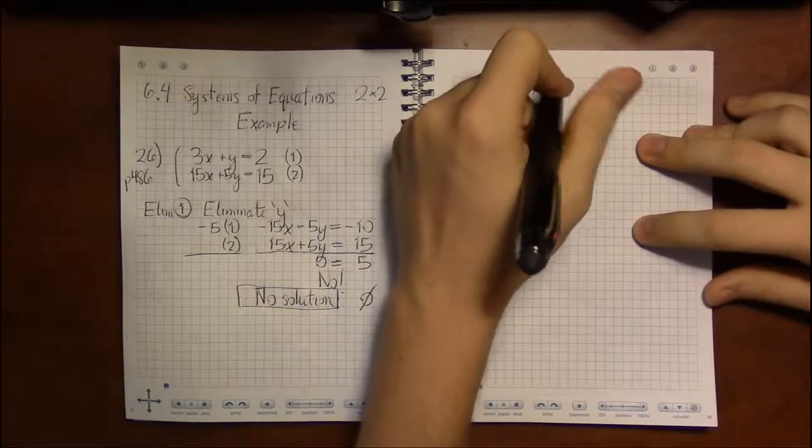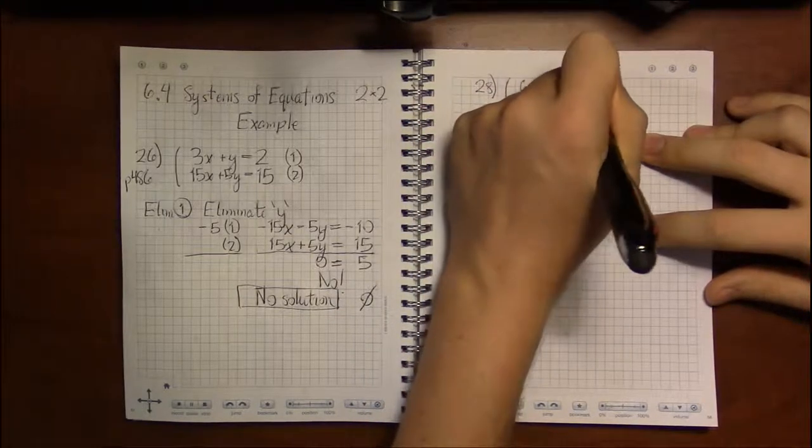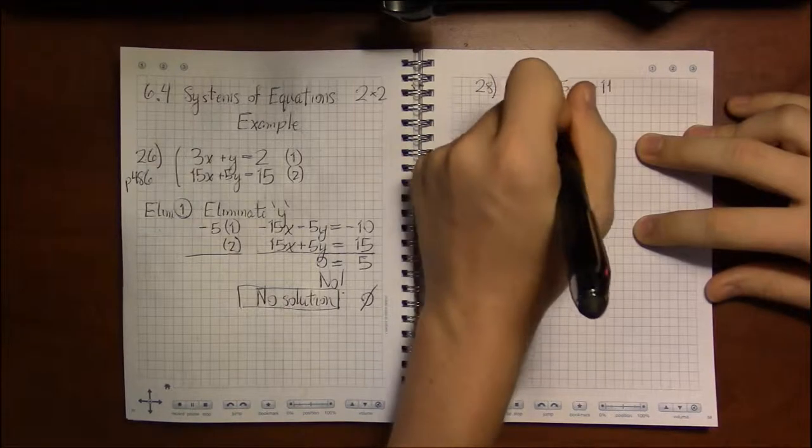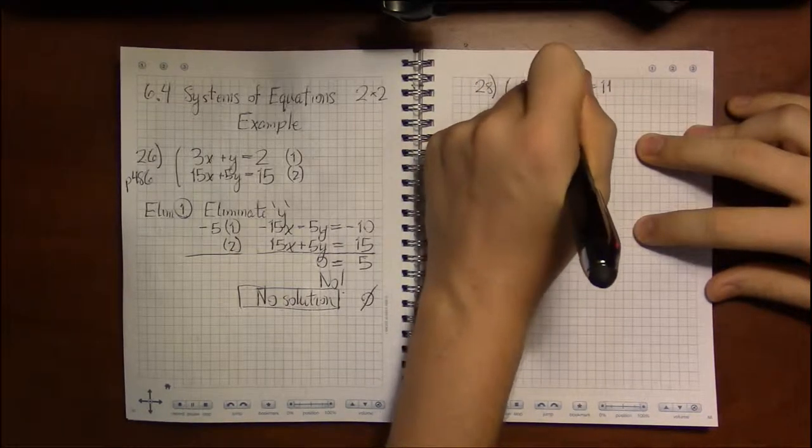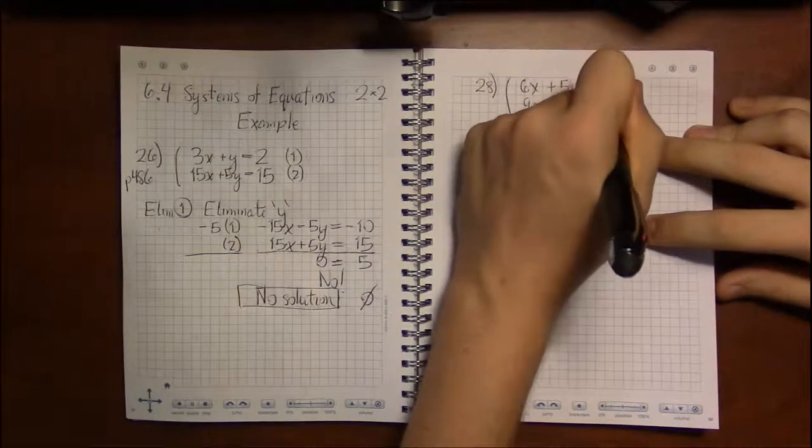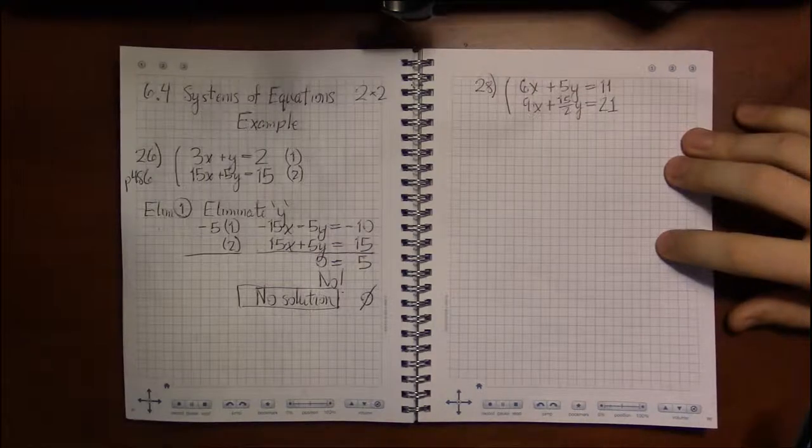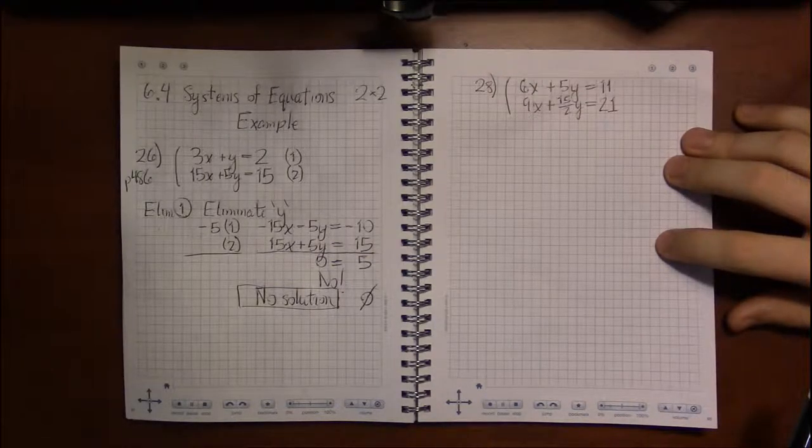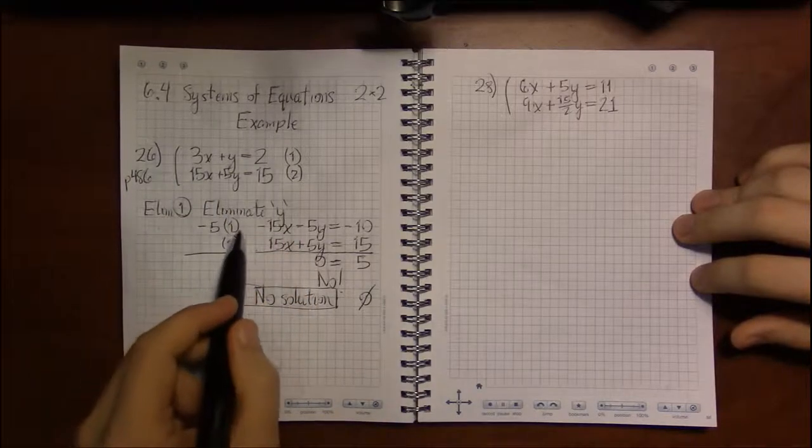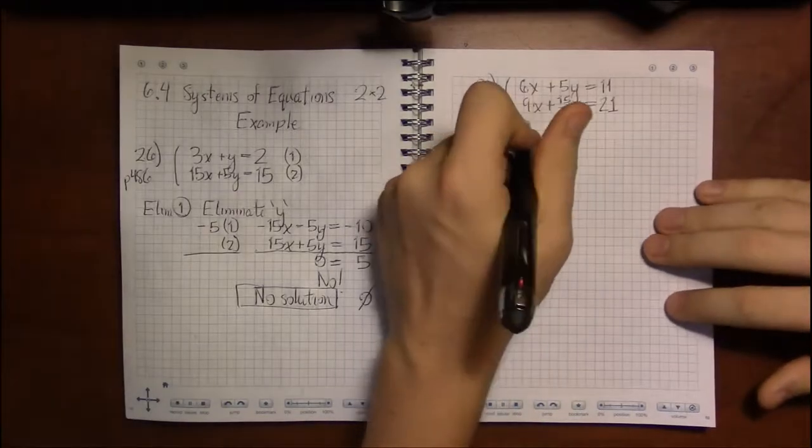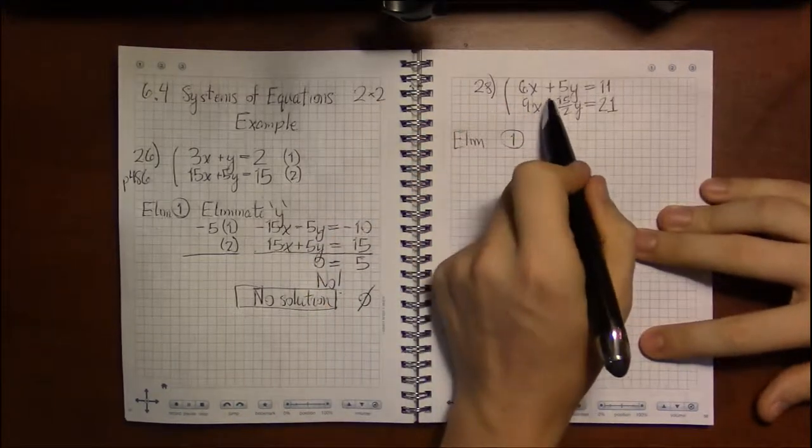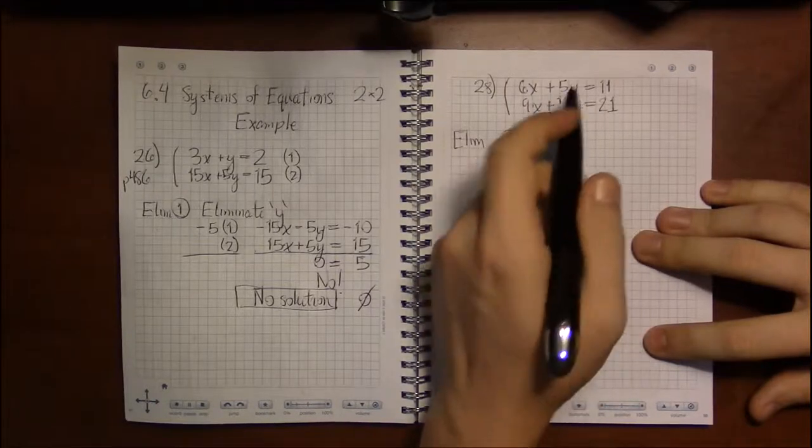Let's look at 28. 6x plus 5y is equal to 11 and then 9x plus 15 halves y equals 21. So it doesn't look like there's a good variable to eliminate or at least not an obvious one like there was here. Now here we didn't even have to touch equation two. We just had to multiply equation one by minus five and everything else finished on its own. And it doesn't look like there's anything nice to substitute. You know I don't really want to solve for x or y in either of these equations.